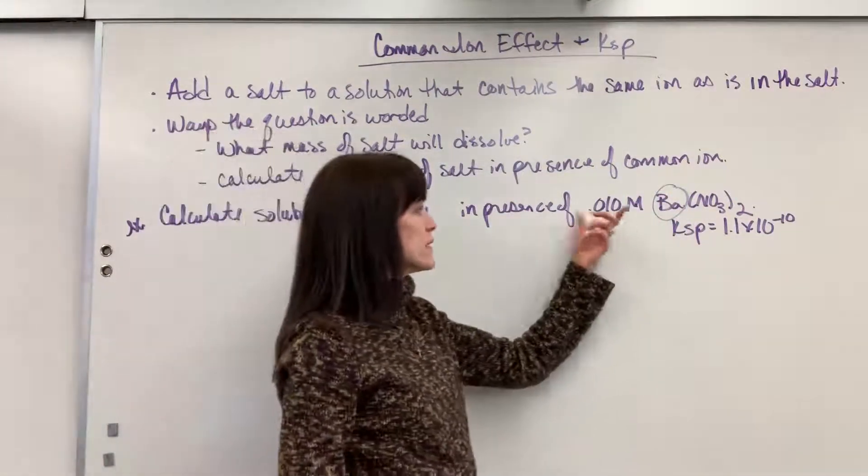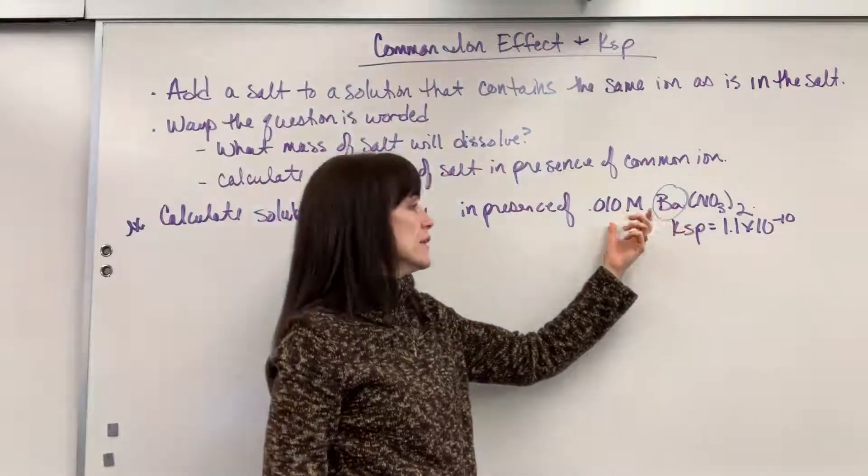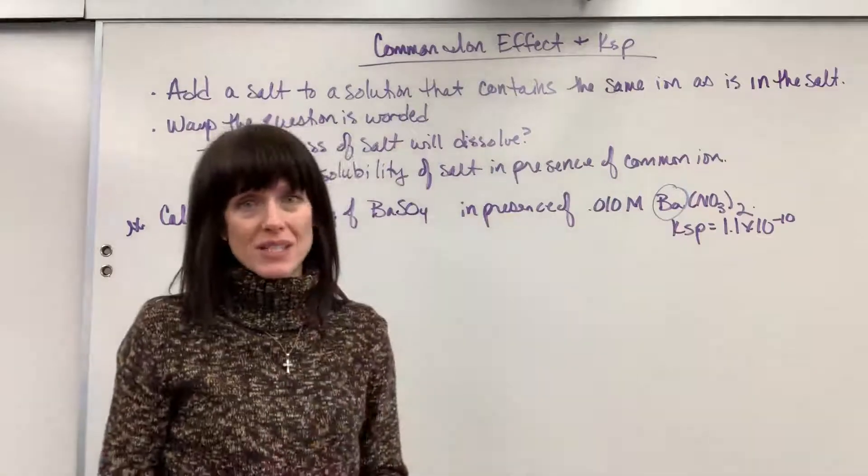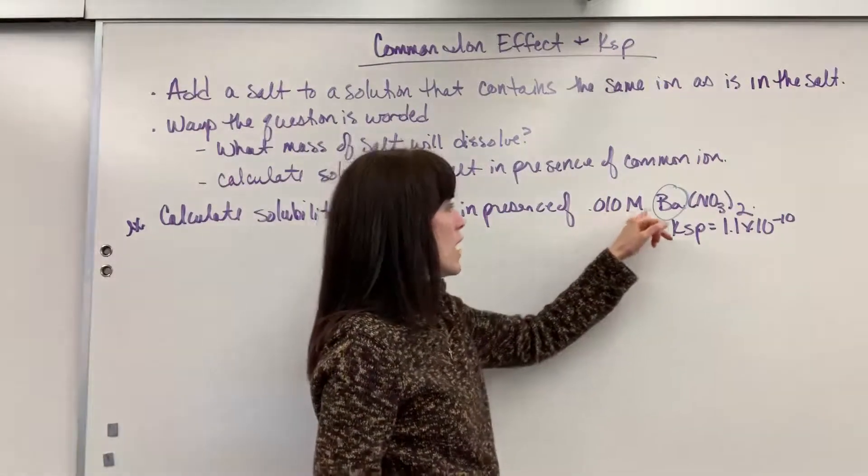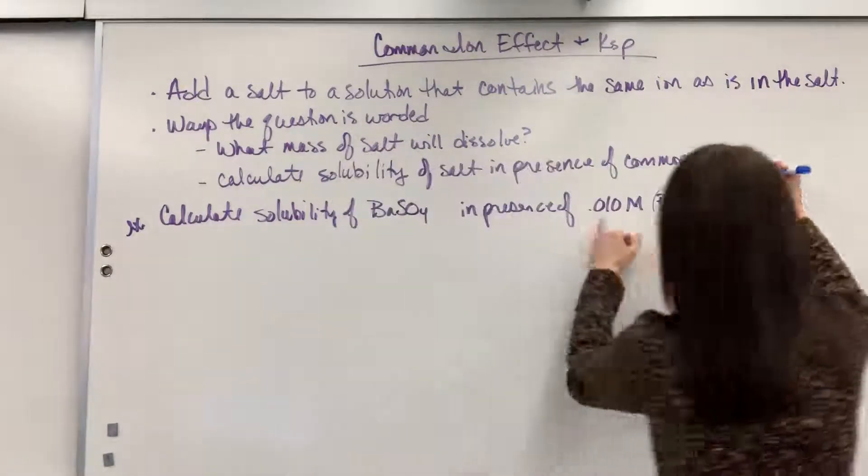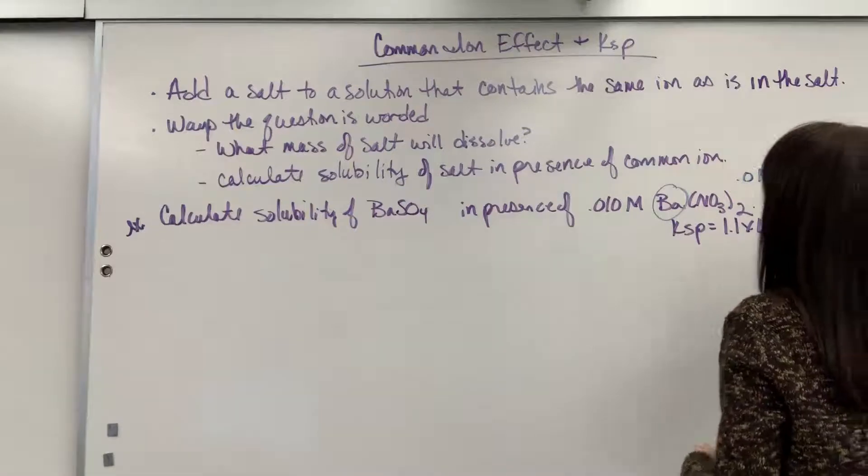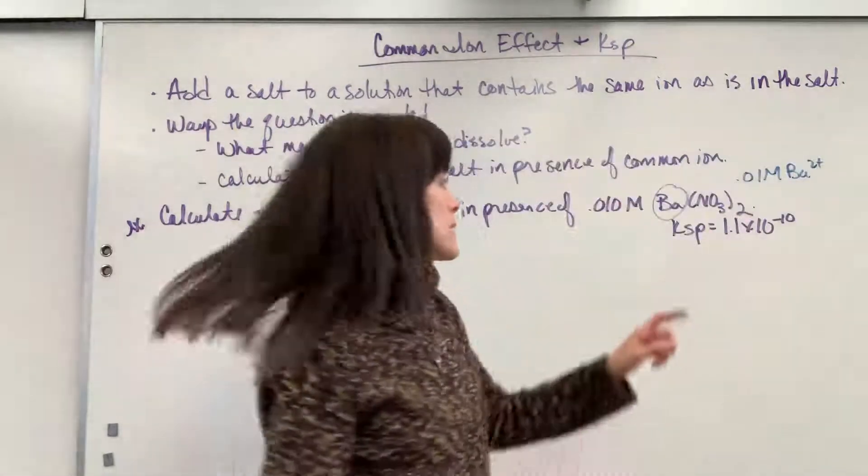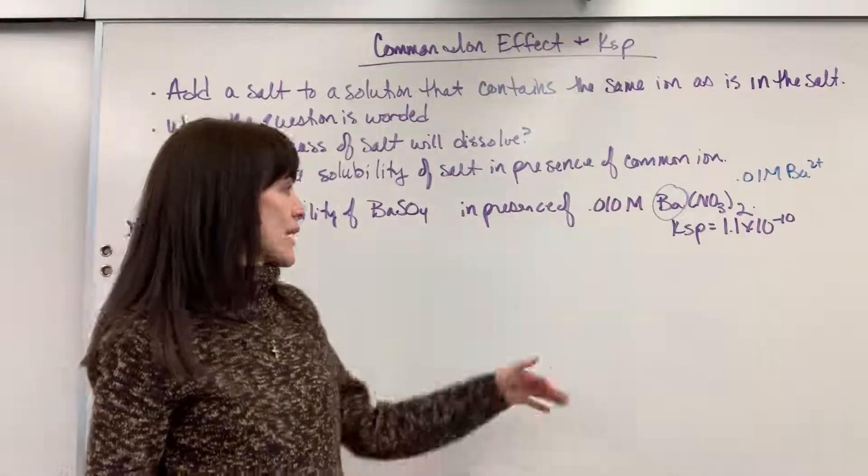So when you're given the amount of that common ion, make sure that you get the molarity of just the ion you're interested in. So I'm looking at this. For every 0.01 molar of barium nitrate, that is going to give me 0.01 molar of a barium ion because one barium is in that barium nitrate.